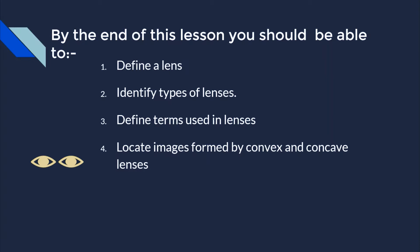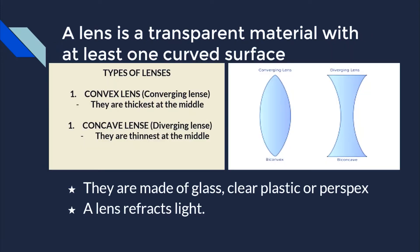What is a lens? A lens is a transparent material with at least one curved surface. From the definition, a lens must have at least one curved surface. There are two types of lenses: the convex lens, which is also called a converging lens.